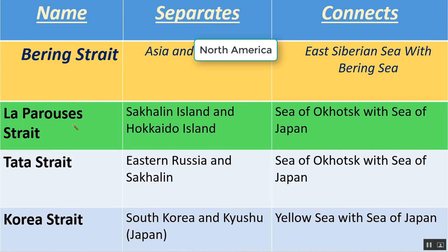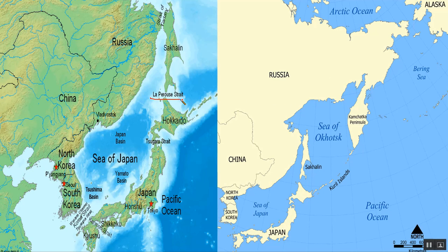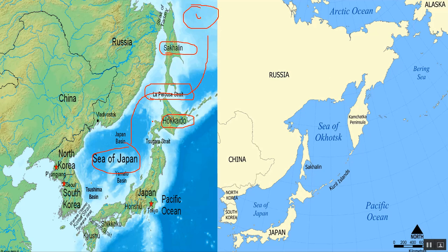The next one is La Perouse Strait. La Perouse Strait separates Sakhalin Island, which belongs to Russia, from Hokkaido Island of Japan, and connects the Sea of Okhotsk with the Sea of Japan. You can see here: Sea of Okhotsk on one side, Sea of Japan on the other, with Sakhalin Island and Hokkaido Island separated by this strait.